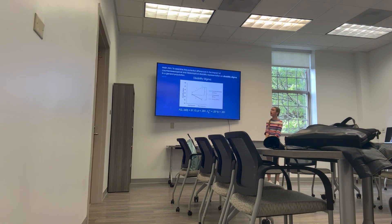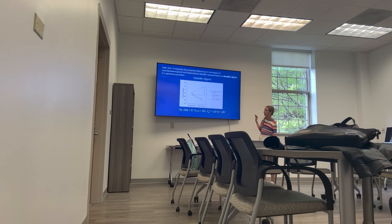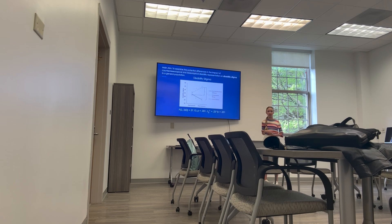My main aim was to examine the potential differences in the impact of counter-stereotypical and stereotypical representation on disability stigma in a general population. I conducted a two-by-three mixed ANOVA to examine disability stigma by group and over time, and there was a significant interaction with a pretty large effect size. Disability stigma decreased over time for the counter-stereotypical group and increased over time for the stereotypical group. There was a significant difference between the stereotypical group and the control group, and between the counter-stereotypical group and the stereotypical group, but not between the control group and the counter-stereotypical group.